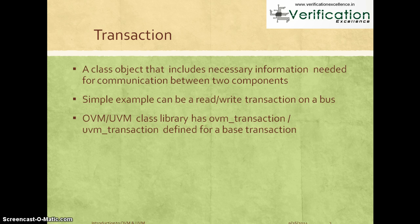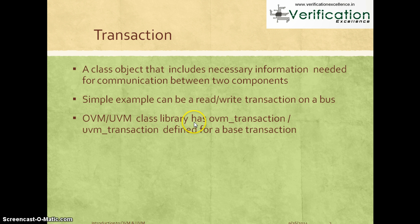Both OVM and UVM class libraries have their own base transactions defined. OVM has something called an OVM transaction class and UVM has something called a UVM transaction class. Anyone building a testbench on OVM or UVM defines their own transactions by deriving from this base class and adding more information specific to what they want to implement.